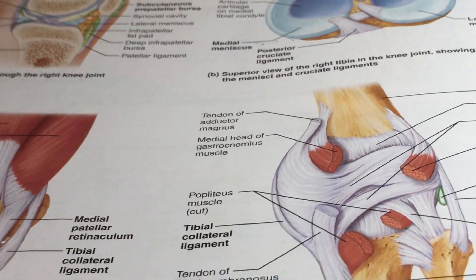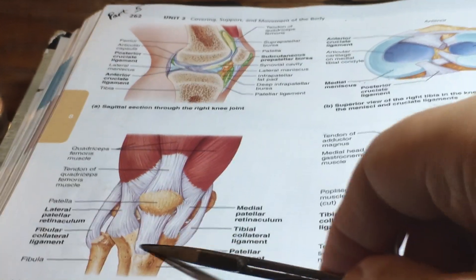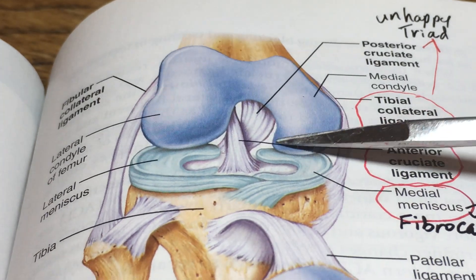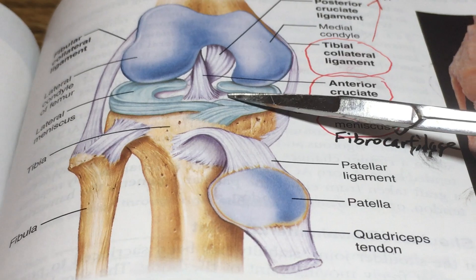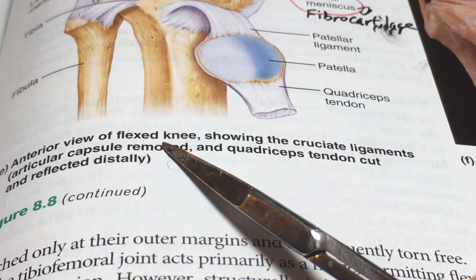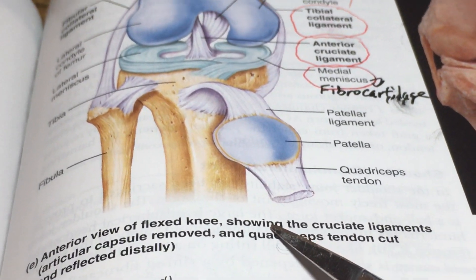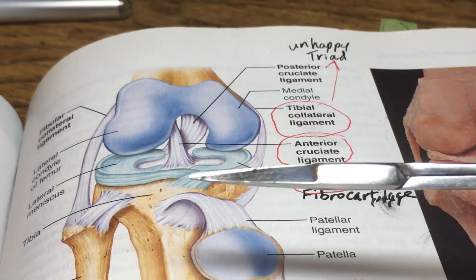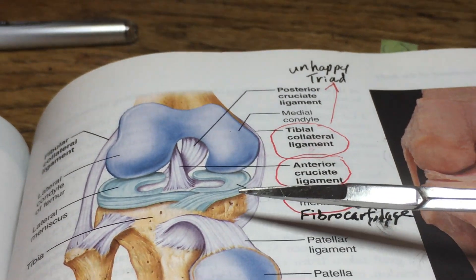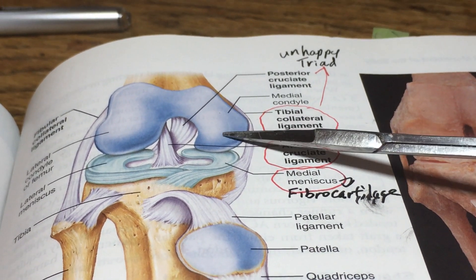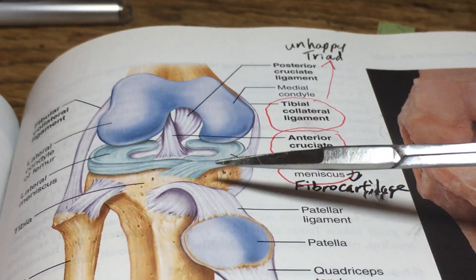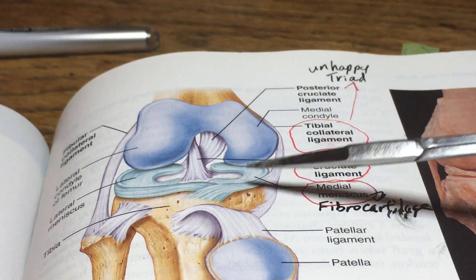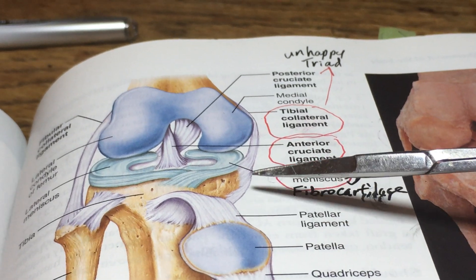Now we're looking at the anterior view of a flexed right knee. The patellar tendon has been cut and the patella pulled down so we're looking straight into the knee. Because it's bent, the condyles are leaning back, but if standing straight they would be right inside the articular space and the meniscus.